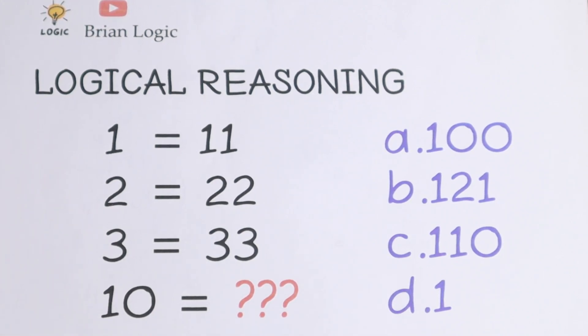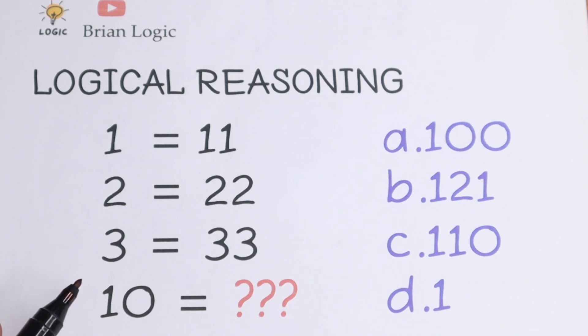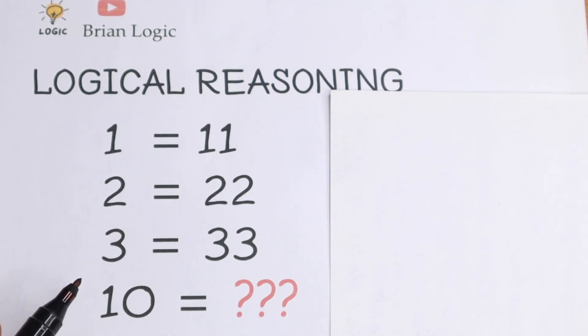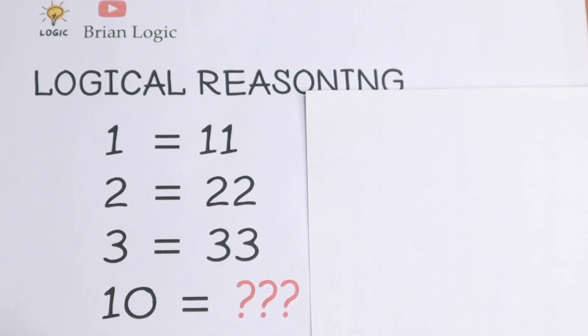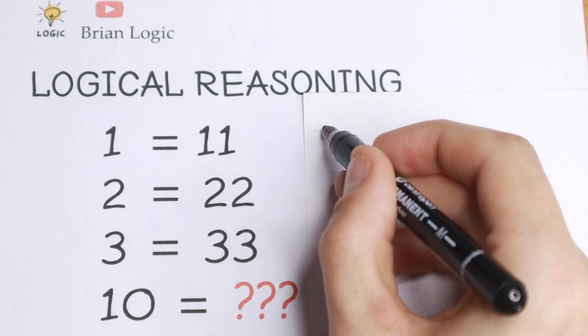Let's try to find the pattern between all these numbers. First of all, take a look - we have 1 equals 11. As I see it, this 11 will be our key number.